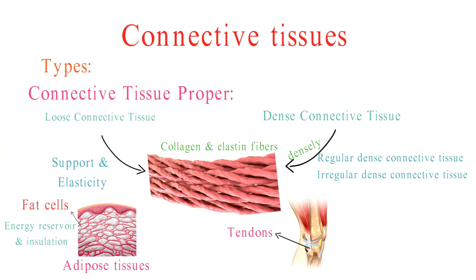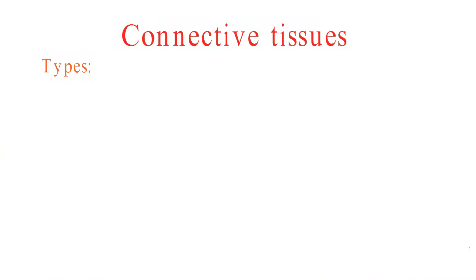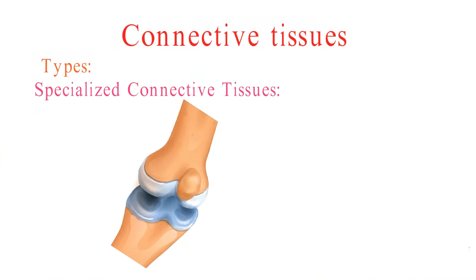Tendons, which connect muscles to bones, allow movement and transmit muscle-generated force. Ligaments, which connect bones to other bones, stabilize joints and prevent excessive movement — both fall under this category. Next, we have specialized connective tissues, which include cartilage, bone, and blood.